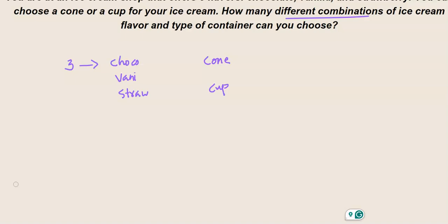The question is: how many different combinations of ice cream flavor and type of container can you choose? By reading this question you can make a guess, then we can compare it with the actual answer. The way to approach these problems with the Fundamental Counting Principle is: total combinations equals number of flavors times number of containers.